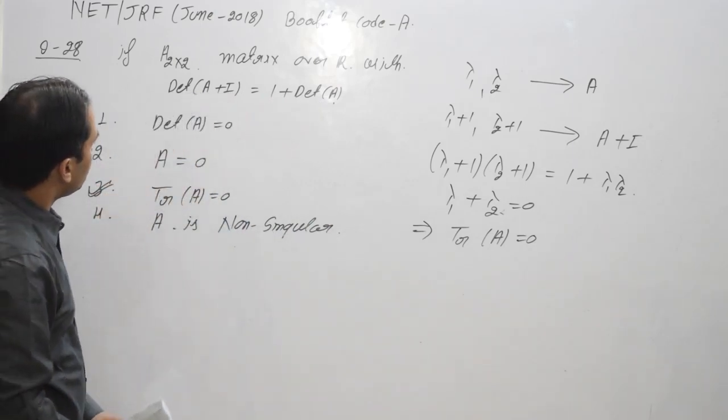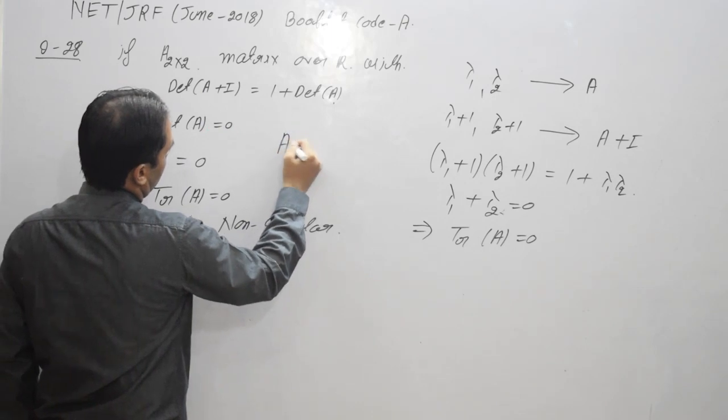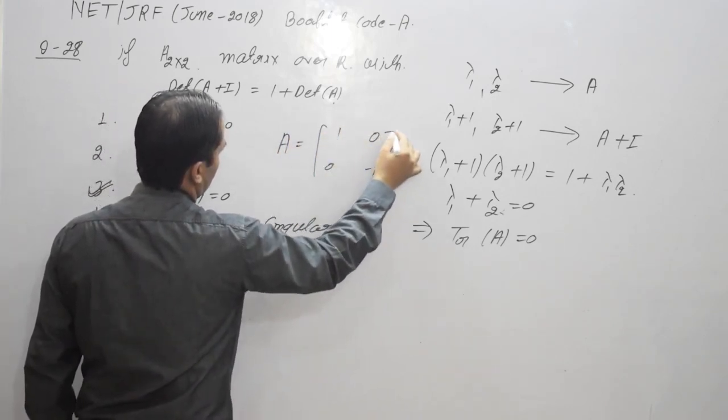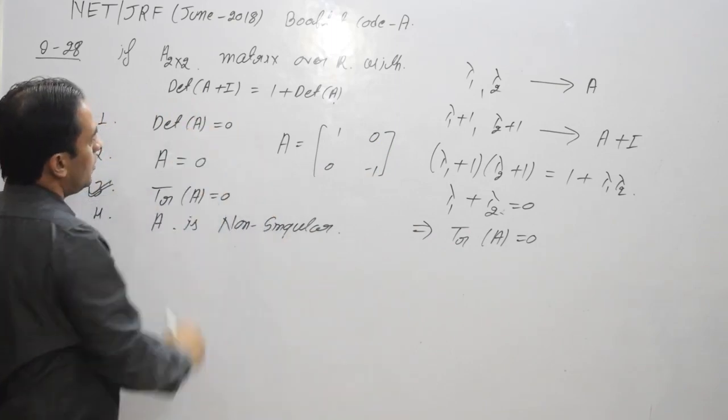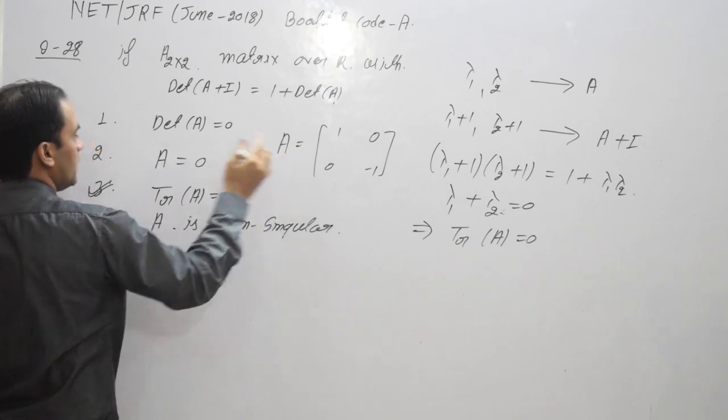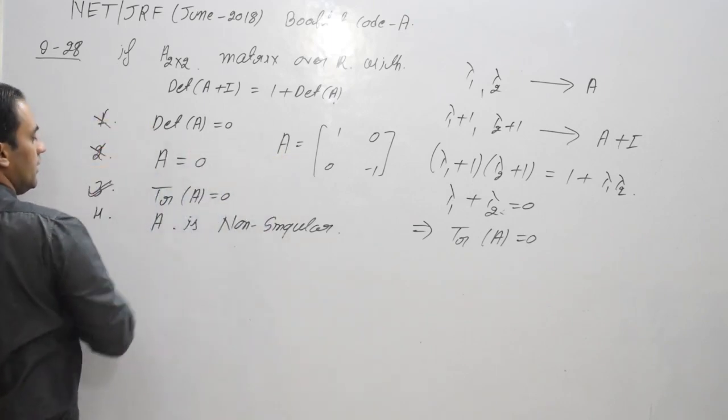For first option, we can take a matrix A which is [1, -1; 0, 0]. This property holds and determinant of A is non-zero and A is non-zero matrix. So first and second are incorrect.